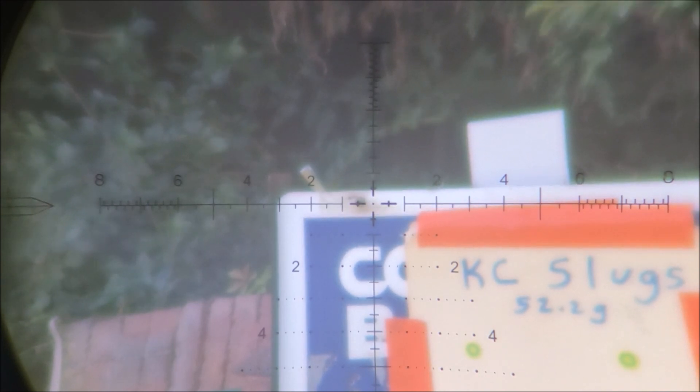We're testing out the 52.2 grain today. I haven't changed any of my settings, so this is set up for the JSB 44.75 pellets. This is the pellet liner, 700 millimeter barrel. It was averaging the 44.75 pellets at around 916 fps.